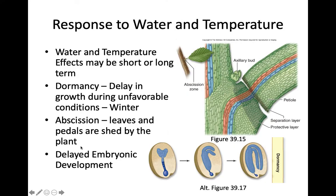Plants can also have responses to variations in water and temperature in the environment — some effects can be short term and some long term. Dormancy is a delay in growth during unfavorable conditions such as winter. Abscission is a different response to water and temperature availability — that's when leaves and petals are shed by the plant. A perfect example is deciduous plants that shed their leaves: first they change color because they're reabsorbing nutrients from those leaves before they enter dormancy, and then they shed those leaves via abscission.